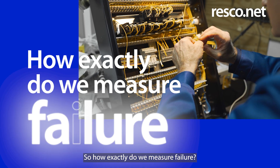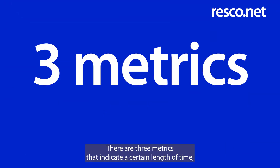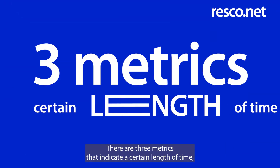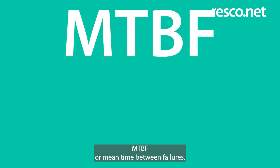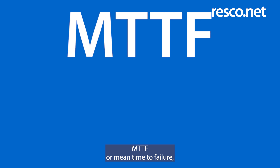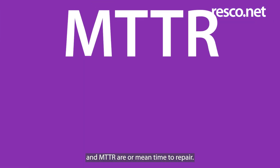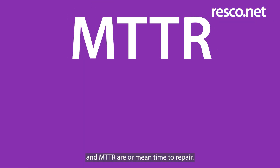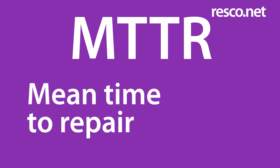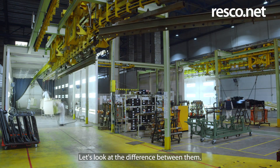So, how exactly do we measure failure? There are three metrics that indicate a certain length of time: MTBF or mean time between failures, MTTF or mean time to failure, and MTTR or mean time to repair. Let's look at the difference between them.